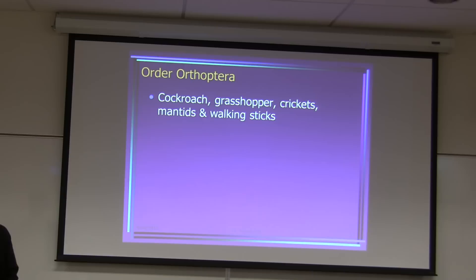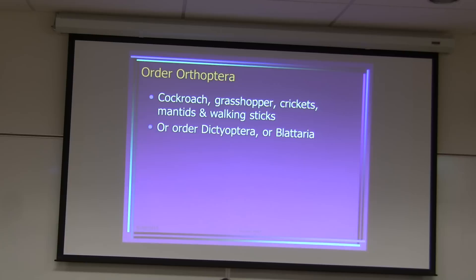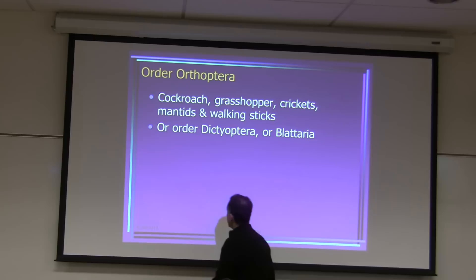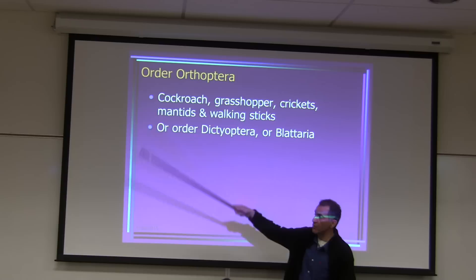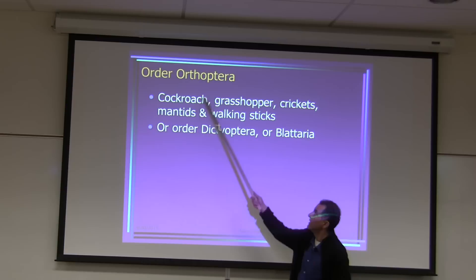Order Orthoptera includes cockroach, grasshopper, crickets, mantids, and walking sticks. Cockroaches are sometimes placed in their own order, but for lab practical purposes, Orthoptera is the accepted classification. The insecticide company name 'Ortho' likely comes from this order name.